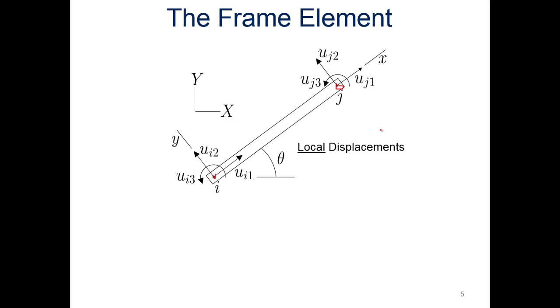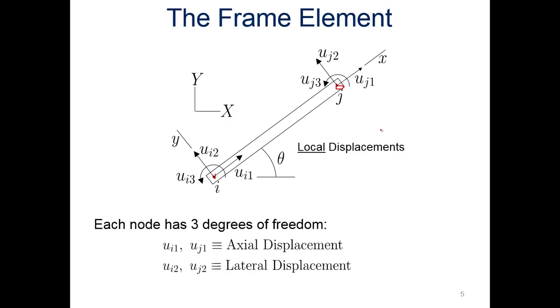If we look at node j, we see the same things going on there. So overall summary, each node has three degrees of freedom. We have axial displacement at nodes i and j, represented by the one. We have lateral displacement at nodes i and j, represented by a two. And the rotation at nodes i and j, represented by three.